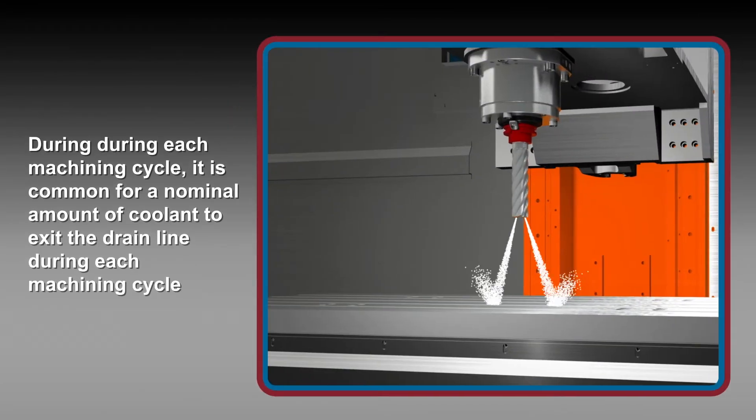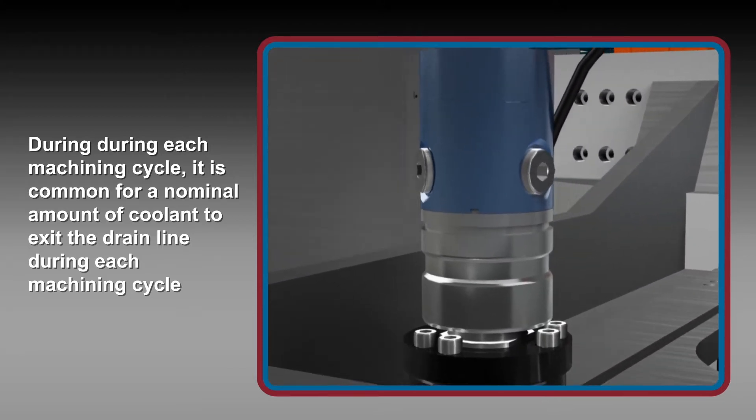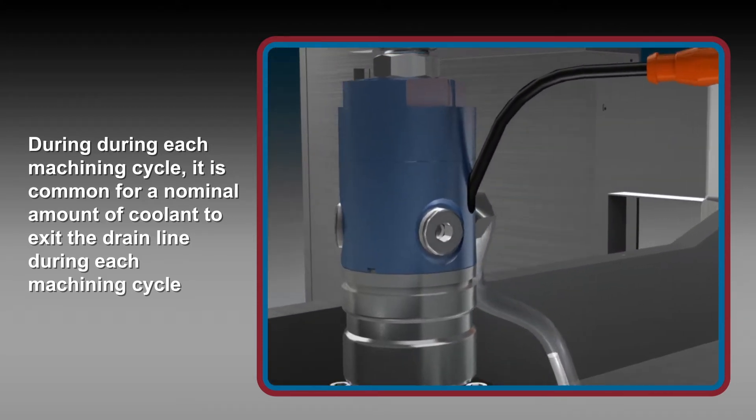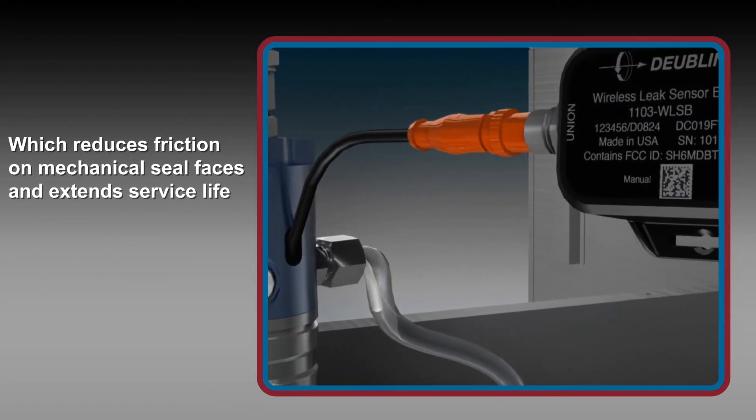During normal operation of through coolant spindles, it is common for a nominal amount of coolant to exit the drain line during each machining cycle, which reduces friction on mechanical seal faces and extends service life.